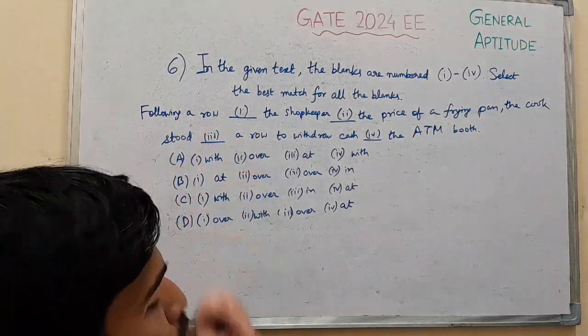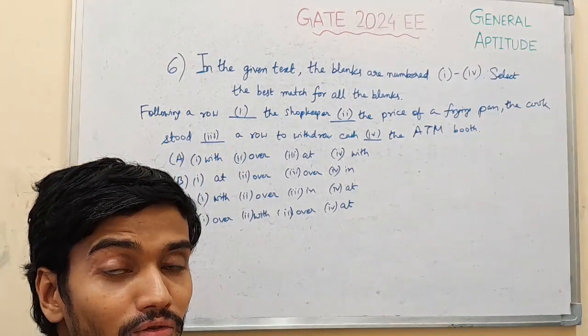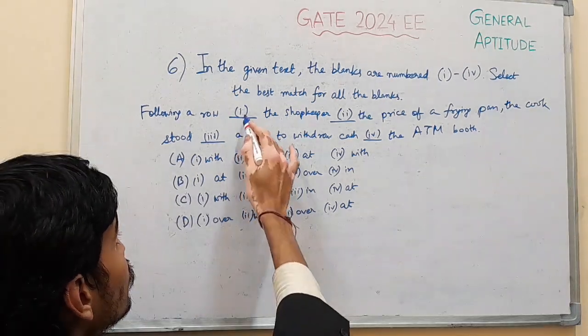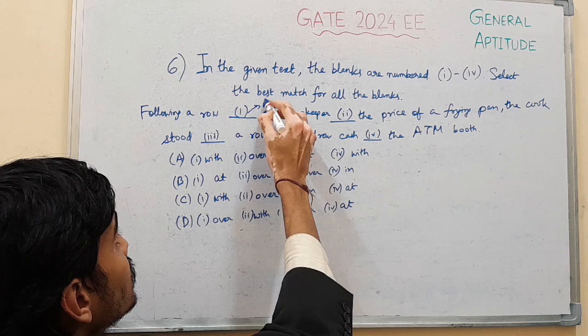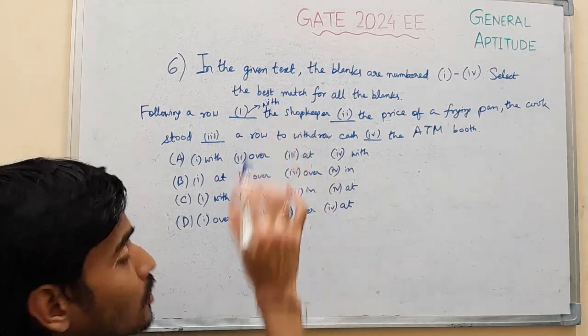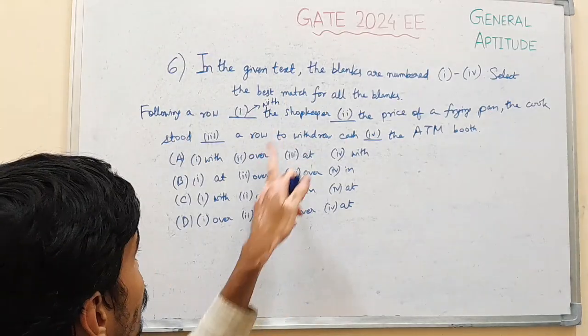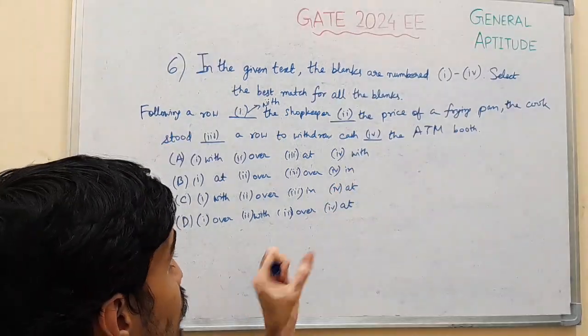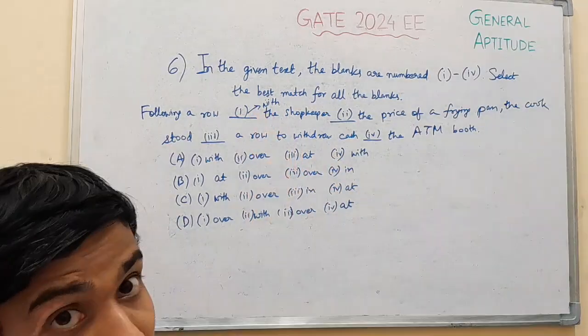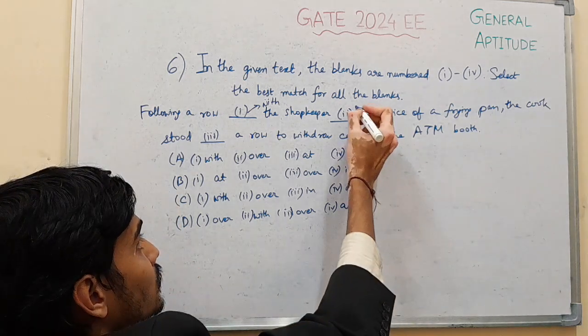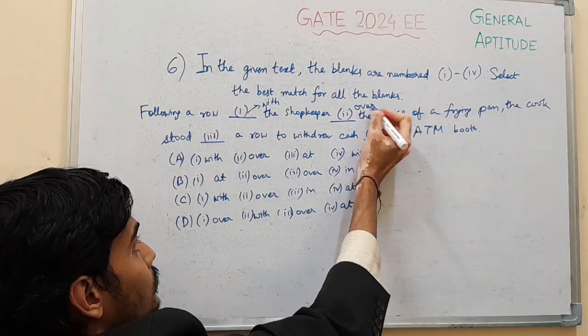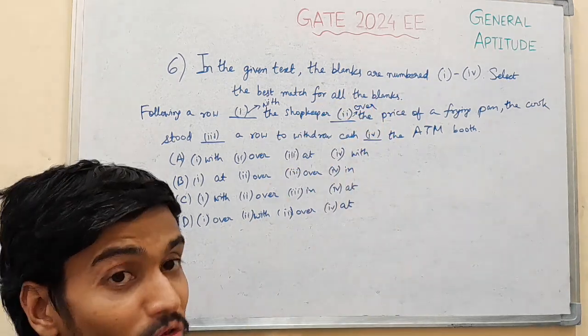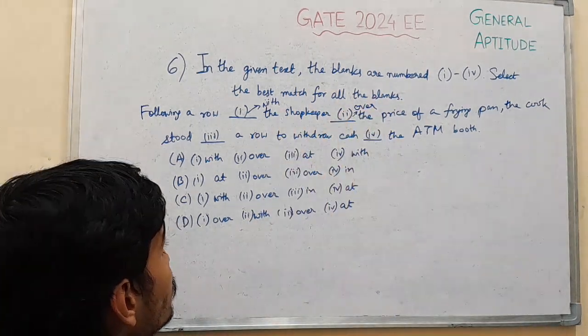In this case, following a row, row is an argument, kind of argument about something. So row is followed by always with, because we argue with someone, so row with someone, row with a shopkeeper. And the price of a frying pan is the object here, over is where the argument or row is happening, so it will be over, argument over something.